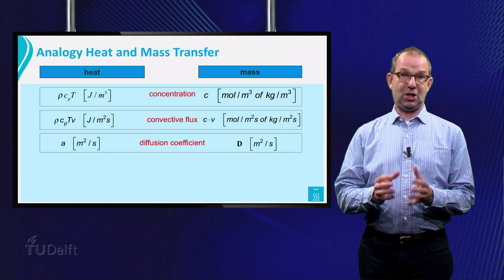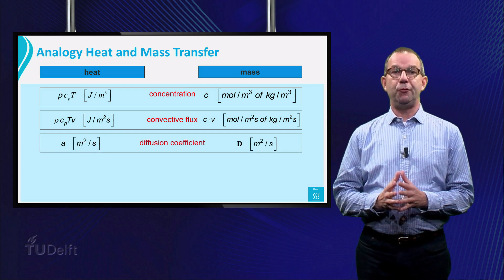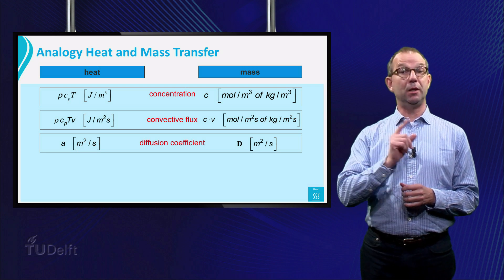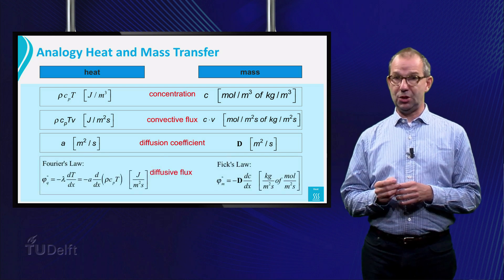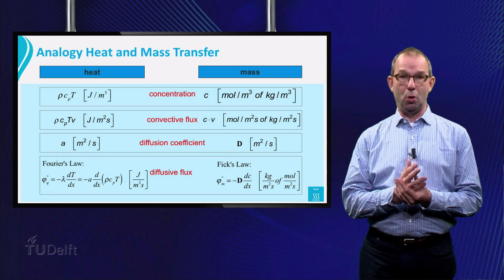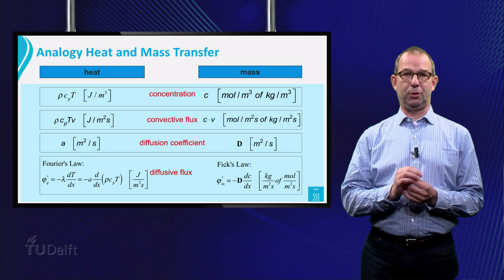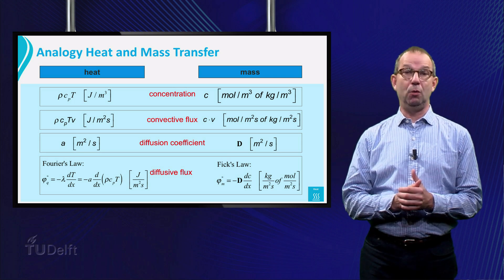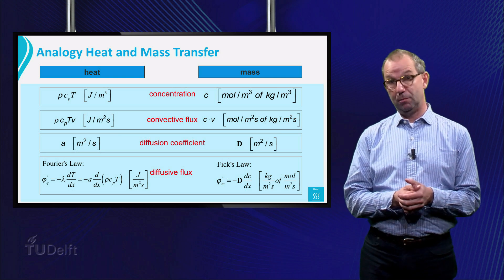Both heat and mass can diffuse. And for both, we have a diffusion coefficient with the same units. Finally, heat conduction and mass diffusion are described by rather similar laws. As a consequence of a gradient in temperature or in concentration, heat and mass flow from high to low T and C.